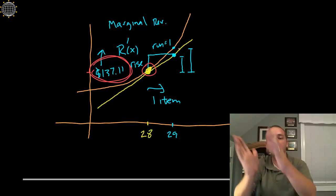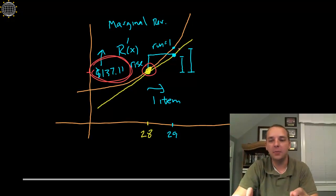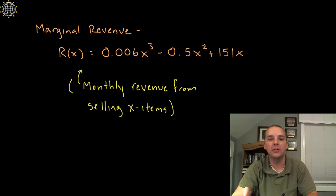And yes, your error will start to grow the more you do that, but really, you're talking pennies here. And the benefits outweigh the disadvantages which would be plugging in 29, 30, 31, 32 back into that really, really nasty original revenue function.